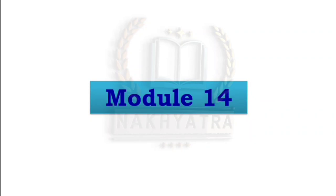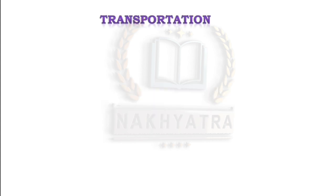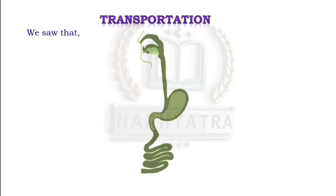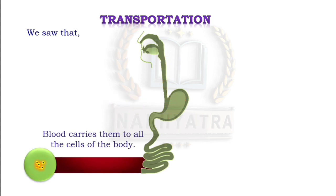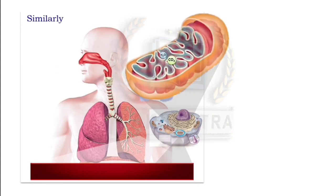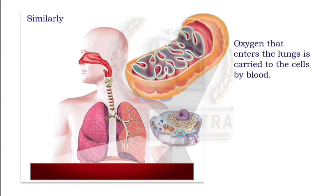Hi class, this is our lesson number seven of the chapter Life Processes. Here we will first study about transportation. We saw that food is taken in through the mouth, then in the stomach food is broken down into simple substances. After that, the blood carries them to all the cells of the body. Similarly, oxygen enters the lungs and is carried to the cells by the blood.